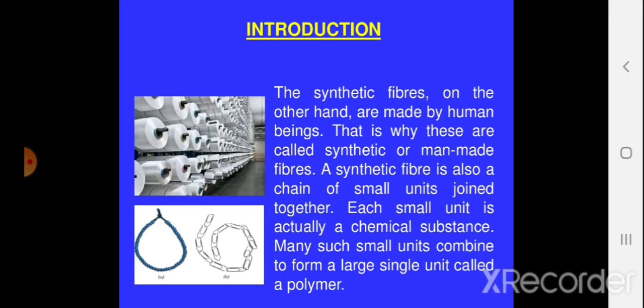Synthetic fibres are made by humans, that is why they are also called manmade fibres. A synthetic fibre is a chain of small units joined together. As you can see in the figure, there are small units — just like U-pins arranged in a sequence. The same kind of chain structure you find with synthetic fibres. Small units of chemical are connected in a chain to form a synthetic fibre.